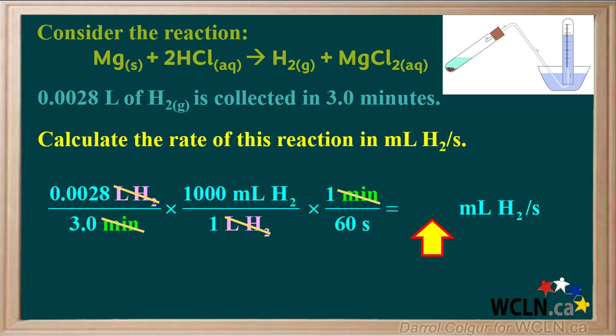We calculate the numerical answer by taking 0.0028 divided by 3, times 1000, divided by 60. This gives us 0.0155 repeating, which we must round to two significant figures, giving 0.016. So the final answer for the rate of this reaction is 0.016 milliliters of hydrogen per second.